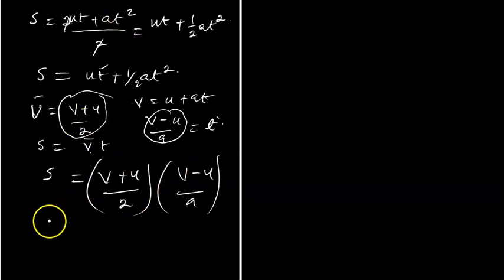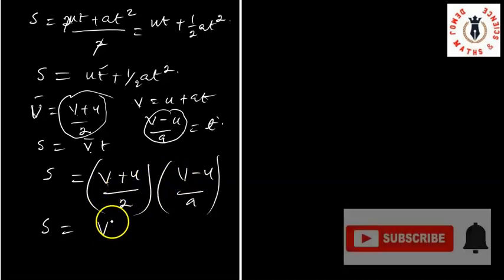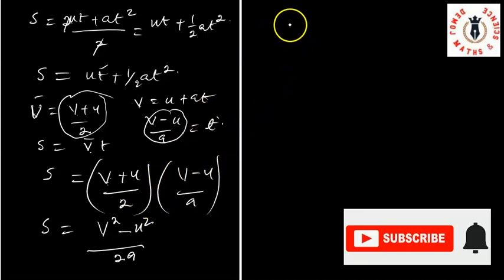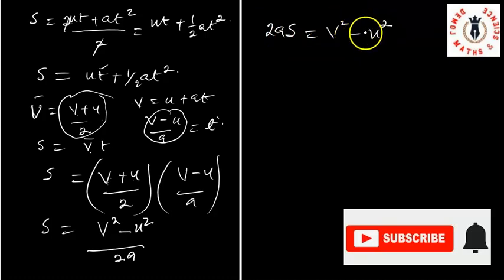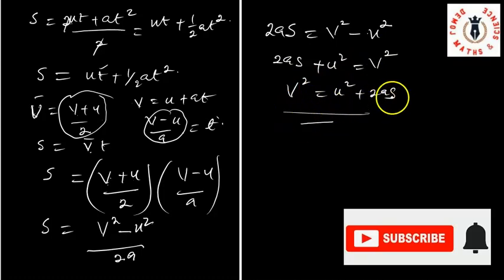Expanding this bracket using the difference of two squares, (V + U)(V − U) = V² − U², so S = (V² − U²) / 2A. Also, in the description below, we'll be leaving a link to our lesson where we taught the difference of two squares. That gives 2AS = V² − U², and moving U² to the other side, 2AS + U² = V², which we rewrite as V² = U² + 2AS. This is the third equation of motion.